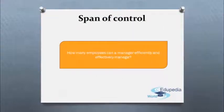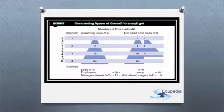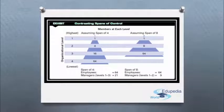So how many employees can a manager efficiently and effectively manage? Now this question of span of control is important because to a large degree it determines the number of levels and managers an organization needs. All things being equal, the wider or larger the span, the more efficient the organization.